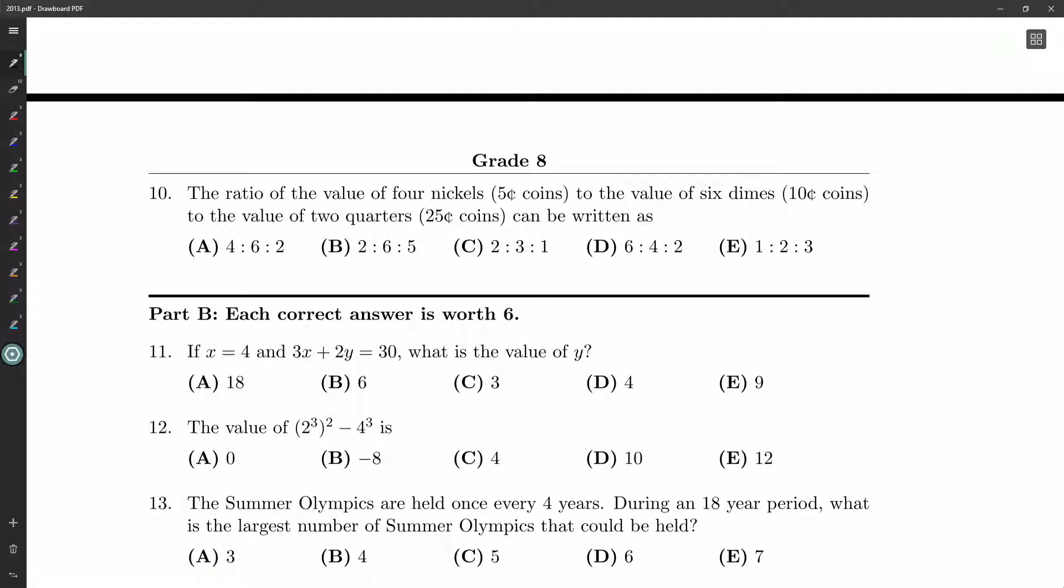Hello once again, my fellow mathletes. Root Beer here looking at question number 10 on our Grade 8 Gauss paper. The ratio of the value of 4 nickels to the value of 6 dimes to the value of 2 quarters, where nickels are 5 cent coins, dimes are worth 10 cents and quarters are worth 25 cents, can be written as.